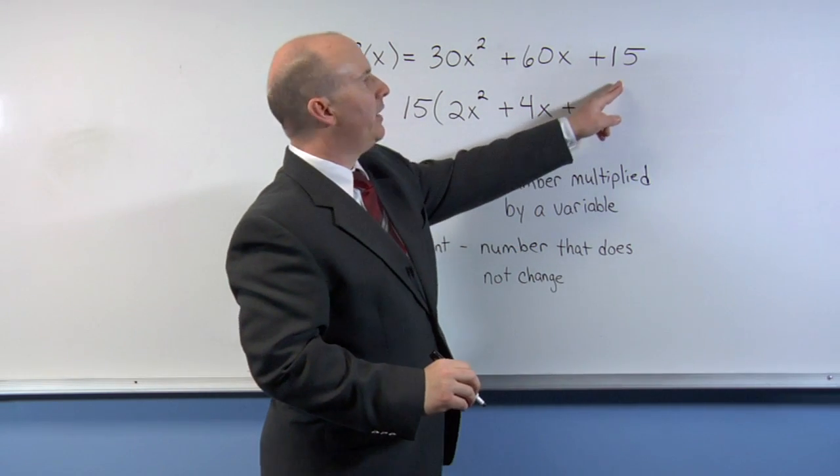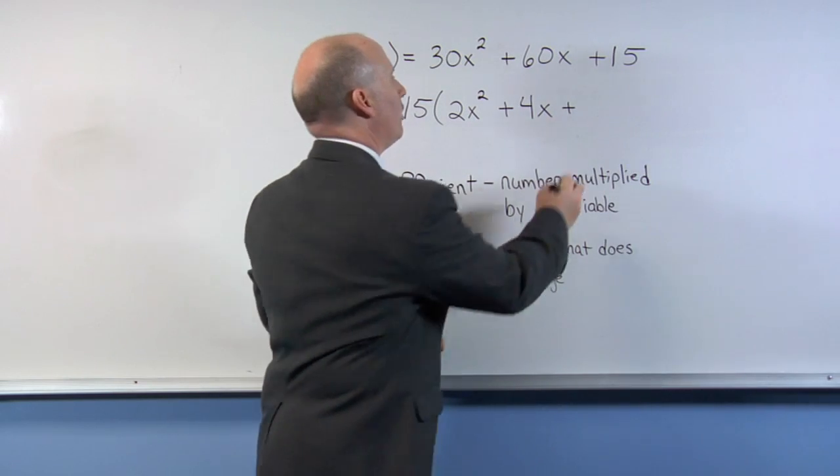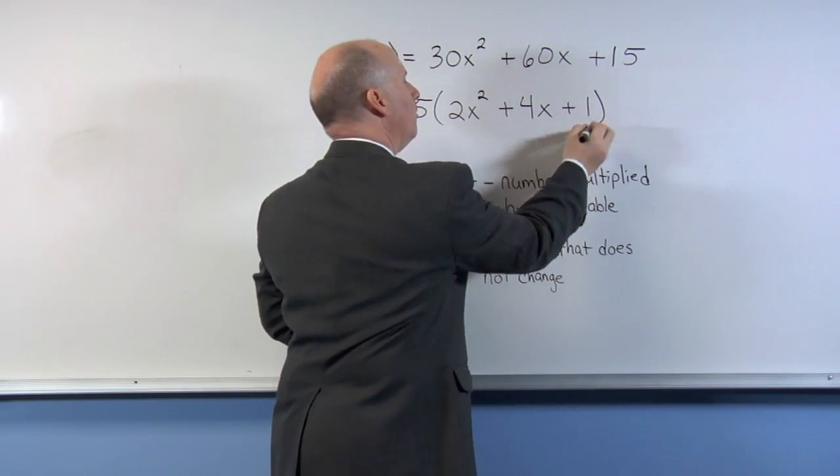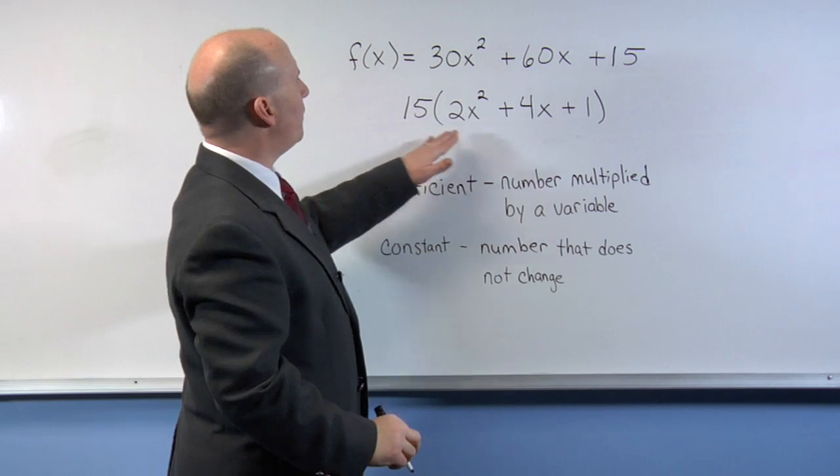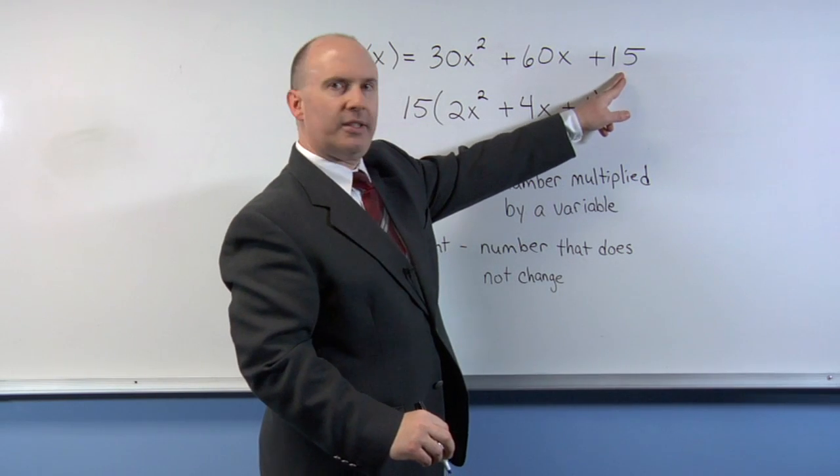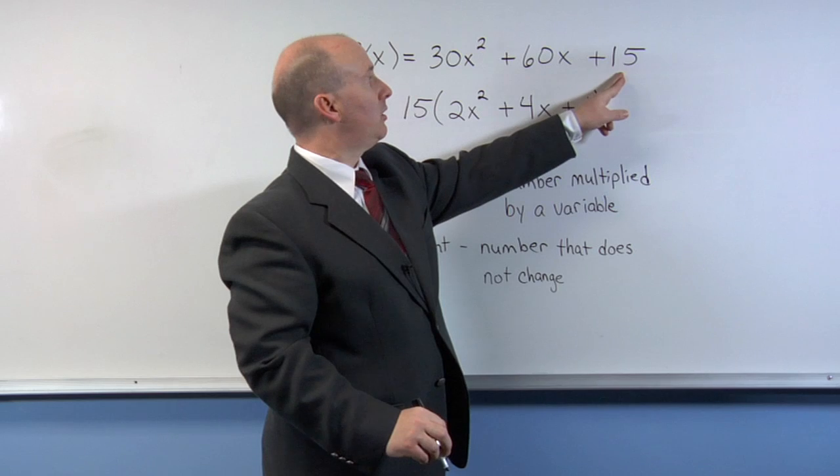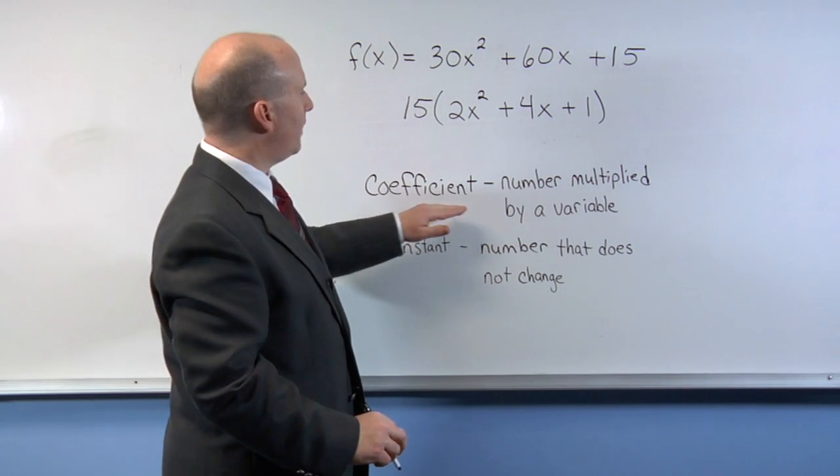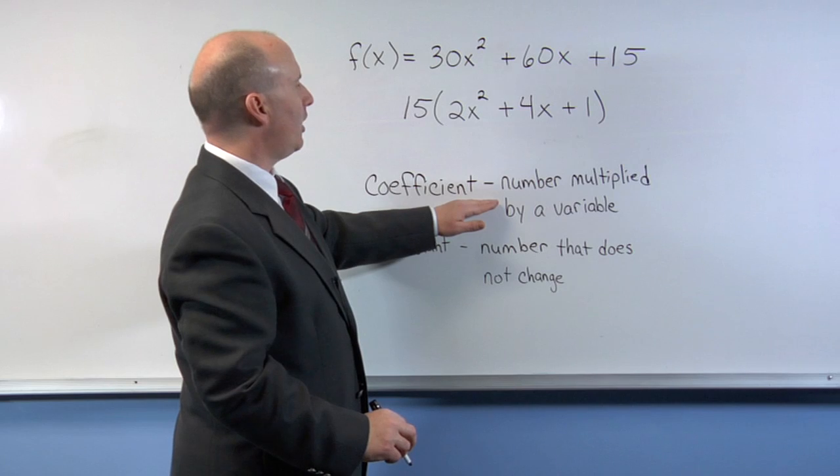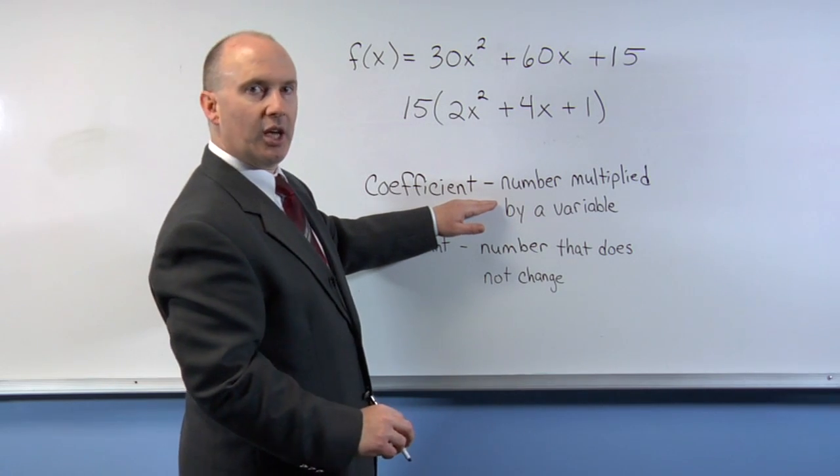And then finally, 15 times what equals 15? Well, that would be 1. So therefore, 15 as a constant can be a factor. However, it cannot be a coefficient because it does not establish the definition of a coefficient.